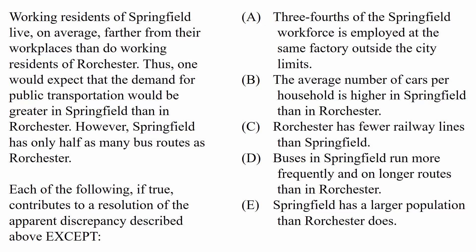In this question, we're asked each of the following, if true, contributes to a resolution of the apparent discrepancy described above, except. We can identify this question as a resolve question, but it presents that twist by asking us to find the exception. It is so easy to forget that we're dealing with an except question on test day, so definitely make sure to circle that word 'except,' and characterize what we're actually looking for. In your mind, tell yourself the answer will provide information that doesn't help the situation and the passage make sense, and the four wrong choices will help resolve the discrepancy.